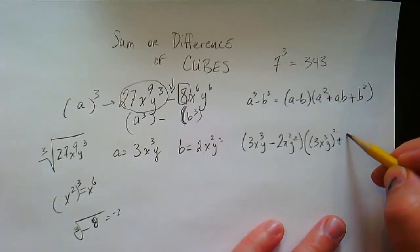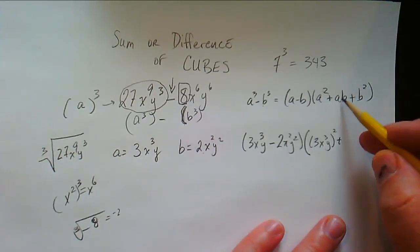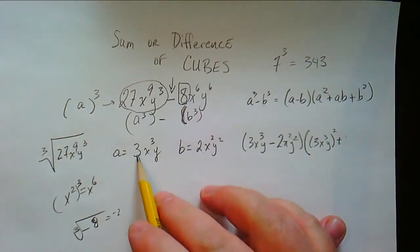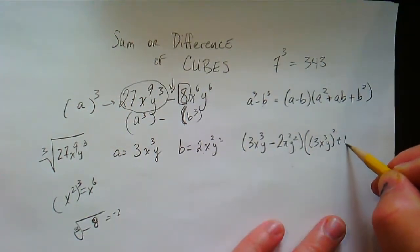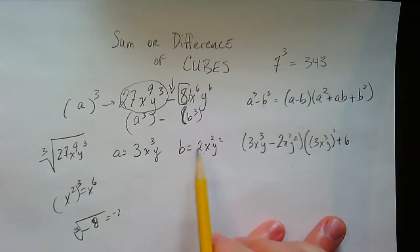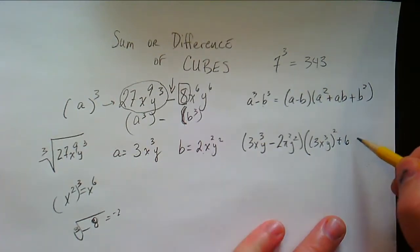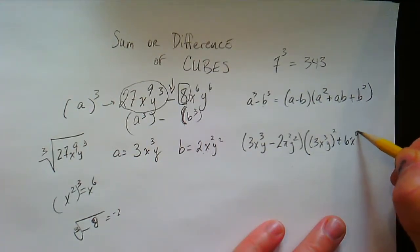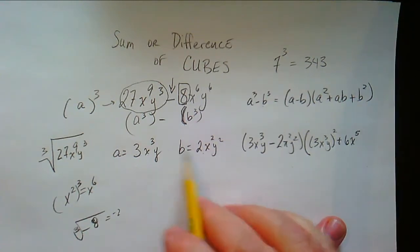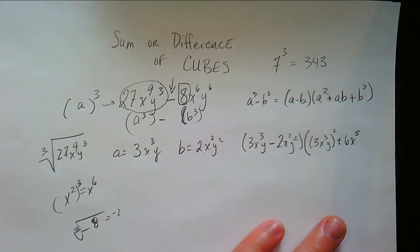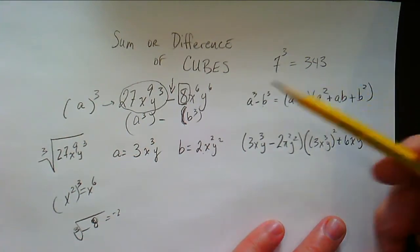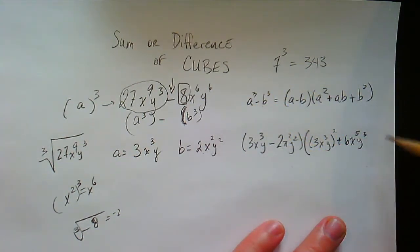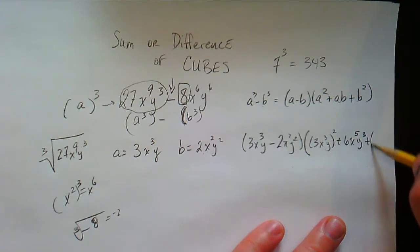Plus a times b. I'm afraid I'm gonna run out of room over here, so let's go ahead and do this in our head. a times b: that's 3 times 2 which is 6, and x cubed times x squared is x to the power of 5, because when you're multiplying same-base terms you add exponents. Same reason why we're gonna have y to the third there. Last thing: we have to square b, so that's 2x squared y squared, squared.